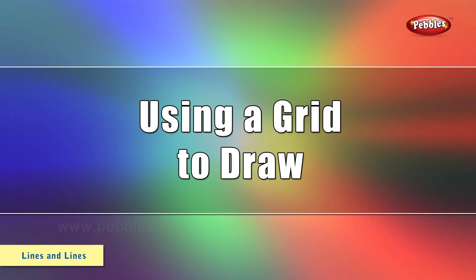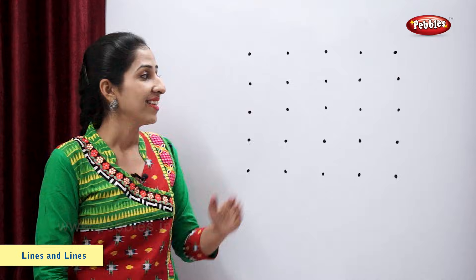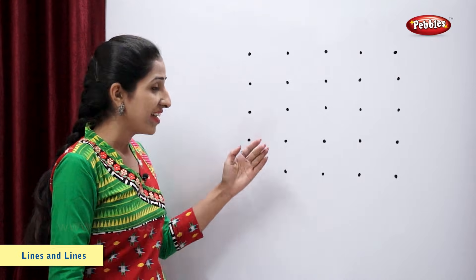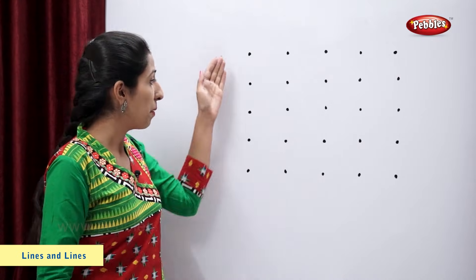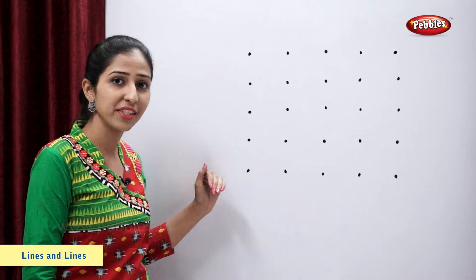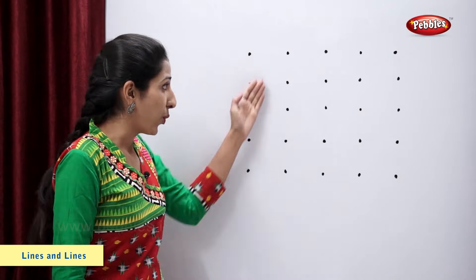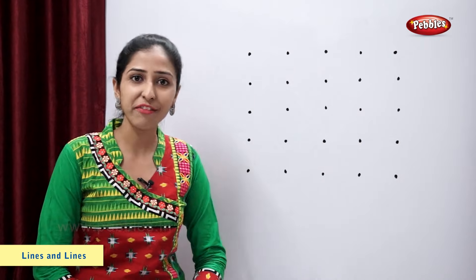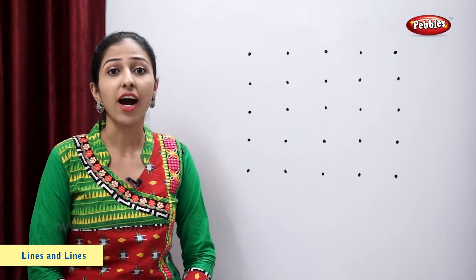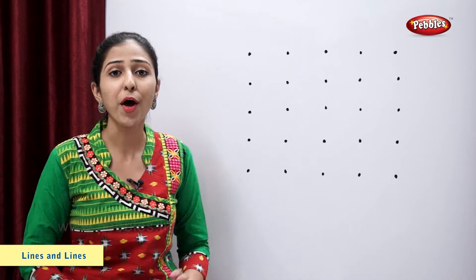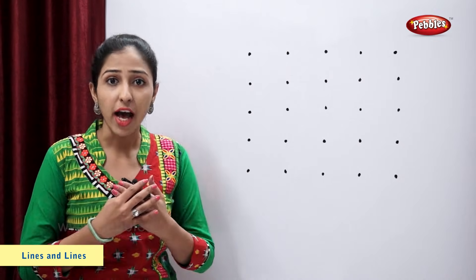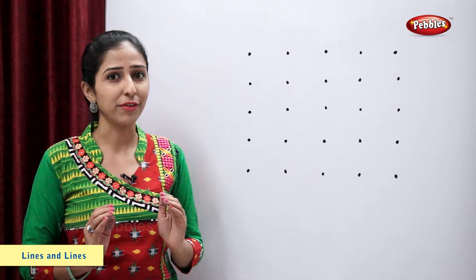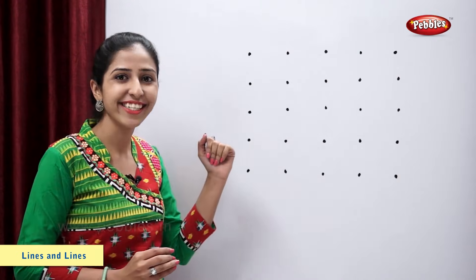How to make use of grid to draw some figures? This is a grid. It is made of 5 by 5 dots, so total there are 25 dots. A grid is used to draw proportionately. Now I will show you how to draw some figures using the grid.